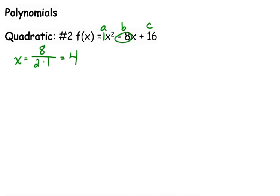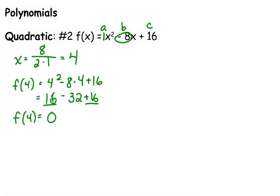We need to know the y-coordinate as well, so we plug it back in. f of 4 equals 4 squared minus 8 times 4 plus 16, which is 16 minus 32 plus 16. 16 plus 16 is 32, and 32 minus 32 is 0. So our vertex is (4, 0).